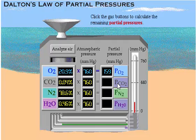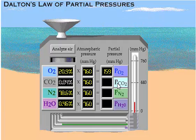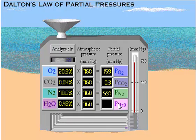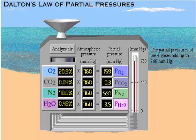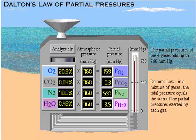Click the gas buttons to calculate the remaining partial pressures. Notice that the partial pressures of the four gases add up to 760 millimeters of mercury, the total atmospheric pressure. This demonstrates Dalton's Law of Partial Pressures, which states that in a mixture of gases, the total pressure equals the sum of the partial pressures exerted by each gas. The partial pressure of each gas is directly proportional to its percentage in the total gas mixture.